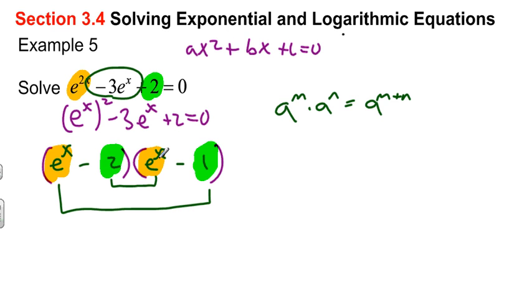So negative 2 times e to the x is negative 2e to the x. And e to the x times negative 1 is negative e to the x. If I add those together, I get negative 3e to the x. And there it is. Voila! I know that I factored this correctly. So this is the exact same thing as this guy.